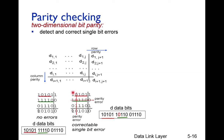Checking columns: the first column has an even number of ones — error free. The second column has an odd number of ones, so there is an error; we mark that column. The third, fourth, and fifth columns have even counts — no error. So only that one row and that one column are marked with error lines, and where they intersect identifies the erroneous bit.